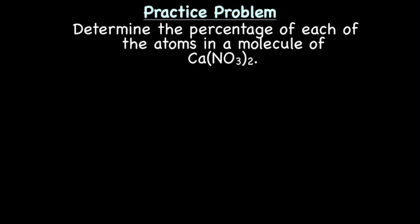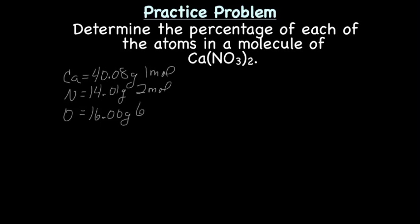Alright, so we're going to determine the percentage of each of the atoms in a molecule of Ca(NO3)2. So let's first of all make a list. We have calcium, and its mass is 40.08 grams, and we have one mole of calcium. We have nitrogen, which has a molar mass of 14.01 grams, and we have two moles of nitrogen. Remember, this number outside the parentheses distributes, which means you multiply. And we have oxygen, which has a molar mass of 16.00 grams, and we have six moles of oxygen.